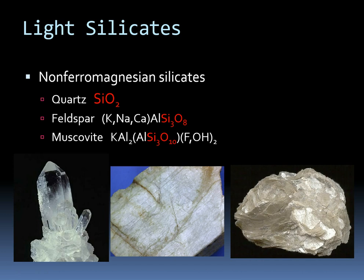Muscovite is one of the mica minerals, which means it has one plane of cleavage and peels off into really thin sheets. It's the lighter-colored of the two micas. You can see in its chemical structure there's nothing to make it particularly dark in color, but it does have a different ratio of silicon and oxygens.